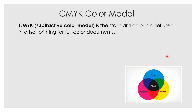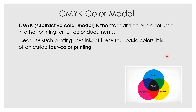Next is the CMYK color model. CMYK is a subtractive color model and is the standard color model used in offset printing for full-color documents. Because such printing uses inks of four basic colors, it is often called four-color printing. The four colors are cyan, magenta, yellow, and black.